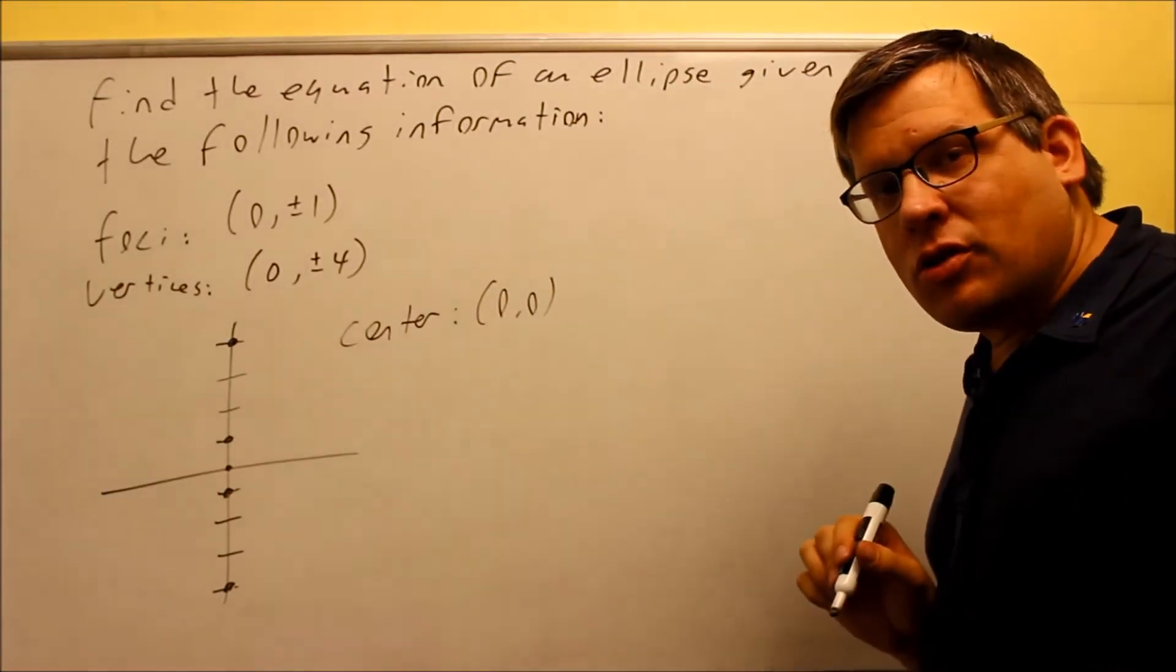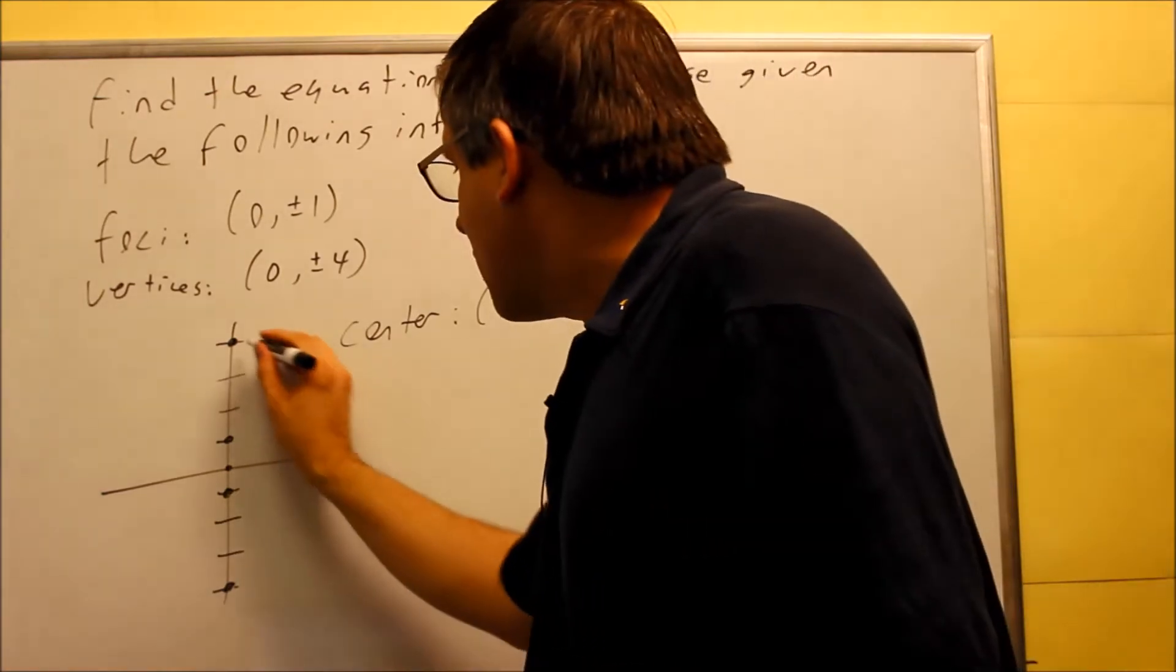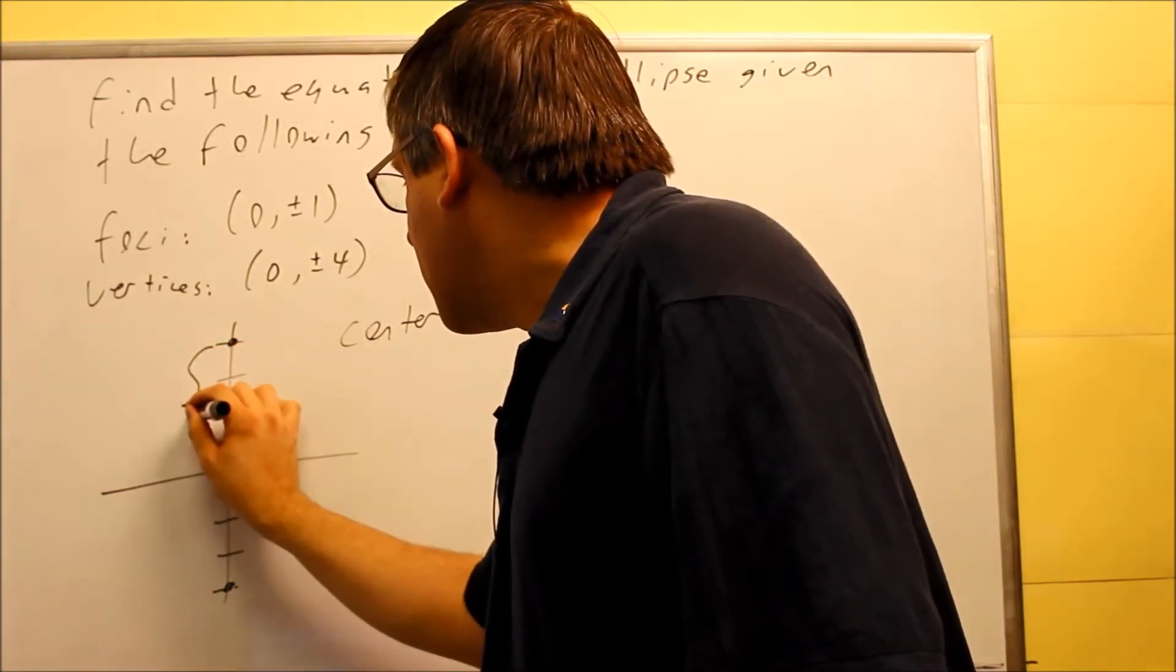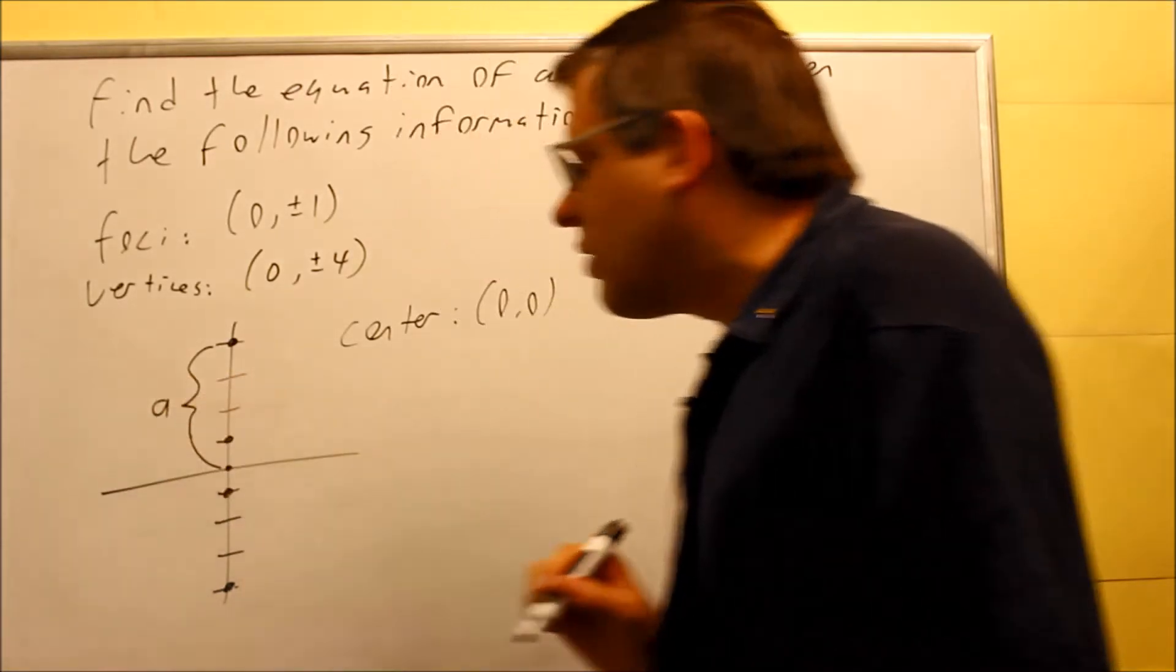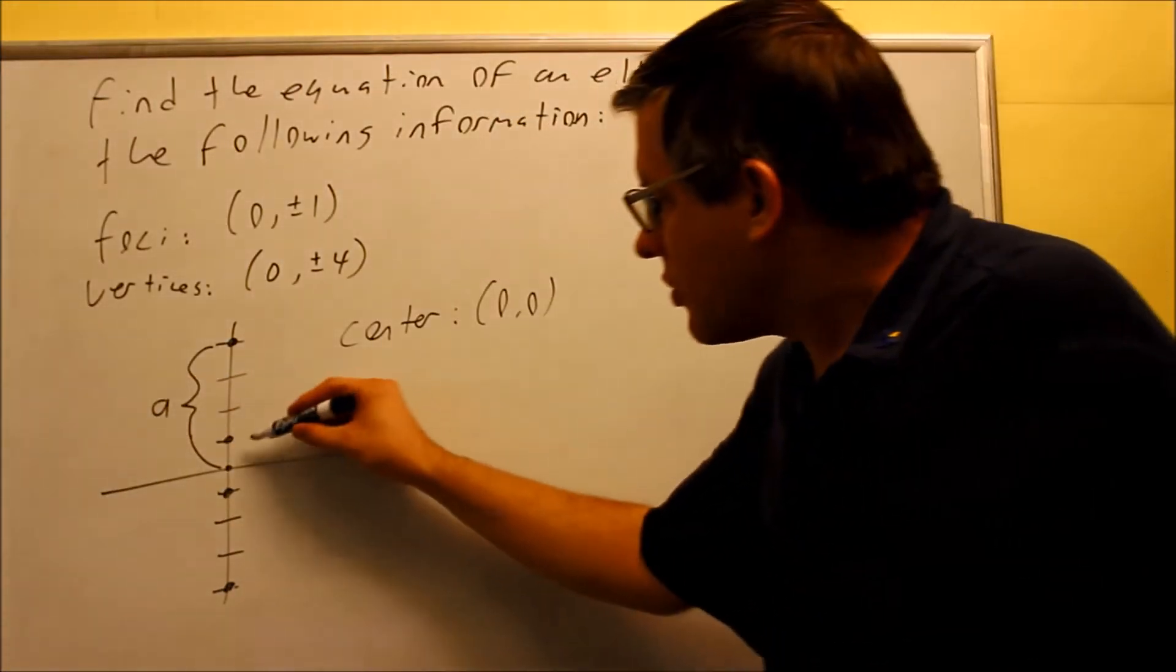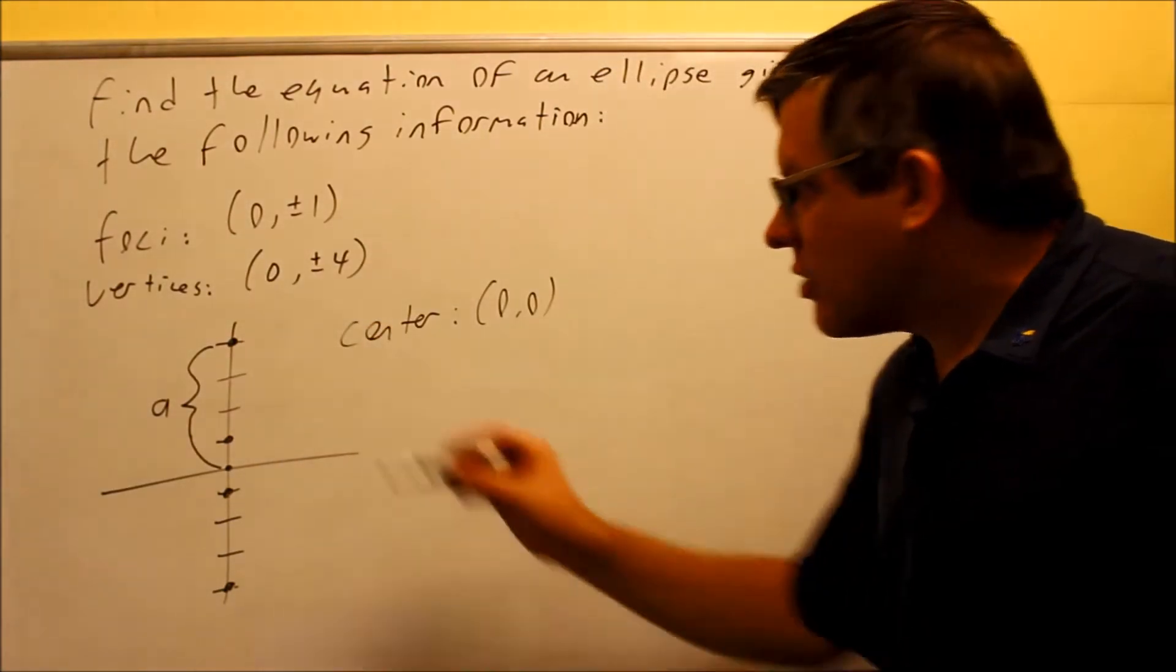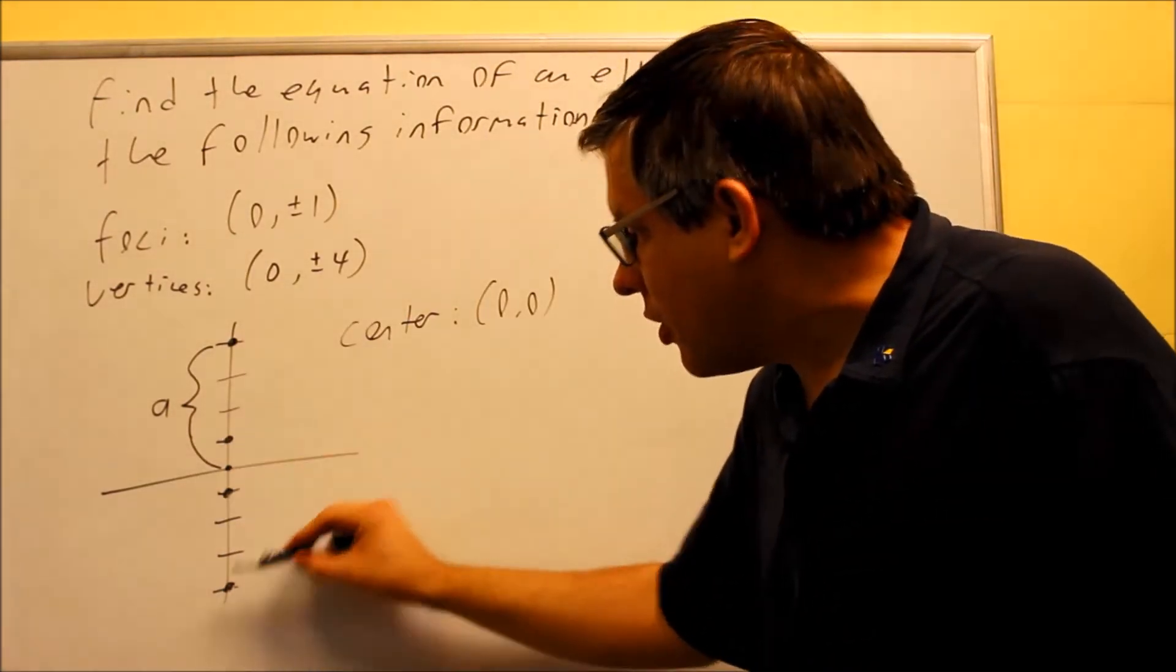Now here's some other information that's provided. The distance from the vertex to the center down below, that's your a value. That's the distance from the center to a vertex. That's always a, the same distance from here down there. Both of them are going to be 4.